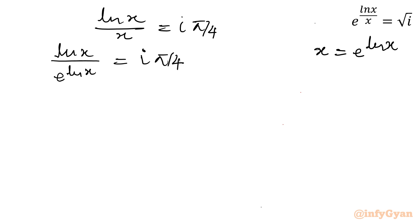Now I will take this exponential term in the numerator. So it will become ln x times e raised to the power minus ln x. It is equal to i pi over 4. Done.